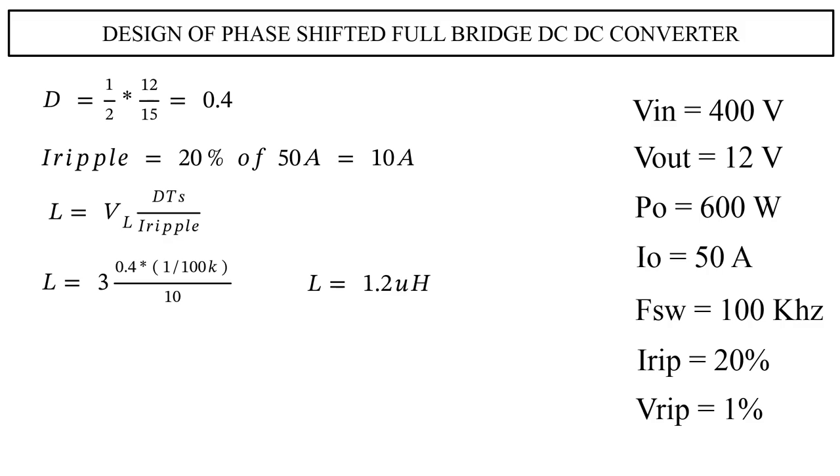Now we design the value of the capacitor. Current through the capacitor is given by I equals C times dV/dt. Therefore C equals I times dt/dV, where I is the current ripple, dV is the voltage ripple, dt is the switch on time.